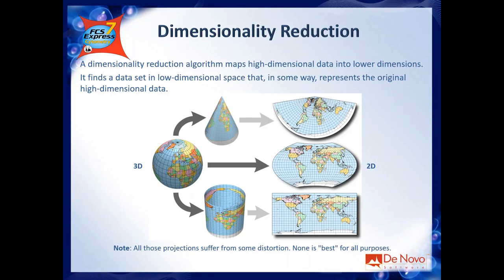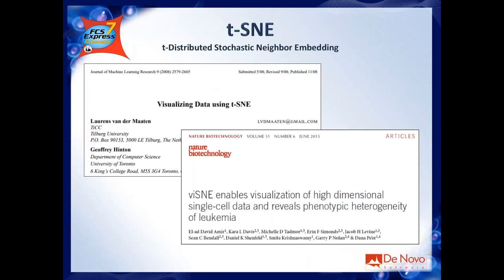A good thing about this example is that there is no single best approach — there are multiple approaches and algorithms. In flow cytometry, tSNE is just one of the strategies you can use to reduce dimensionality, but it works really well and is now widely used. tSNE was first published in 2008 and entered the flow cytometry world around 2013, when it was called viSNE — but the algorithm is essentially the same.